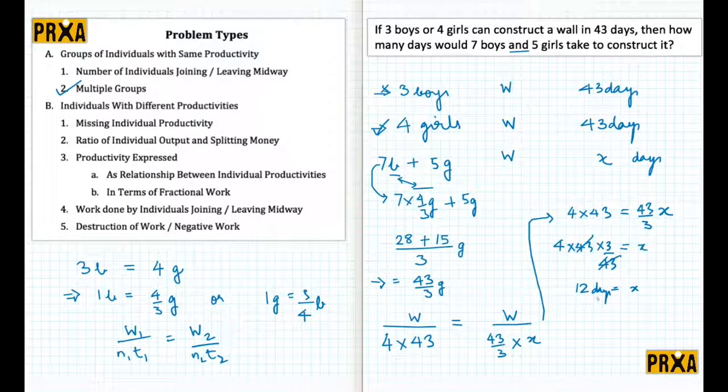Hope this is clear. Now what we have done, I'll just quickly summarize. If we are given two different groups or even more than two groups, what we need to do is replace one group with the other in the combined question. Now here there is a combination of boys and girls, so all I need to do is replace one with the other and then equate the w1 upon n1 t1 of here with the corresponding w2 upon n2 t2.